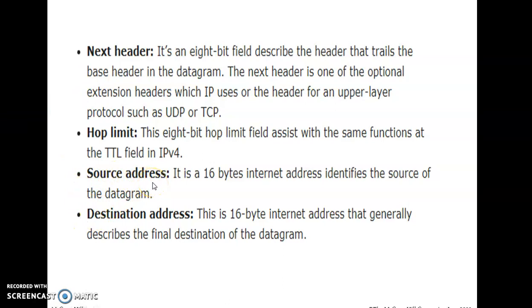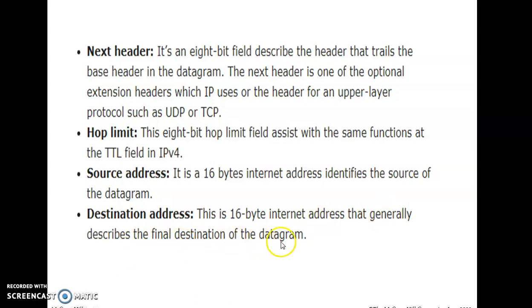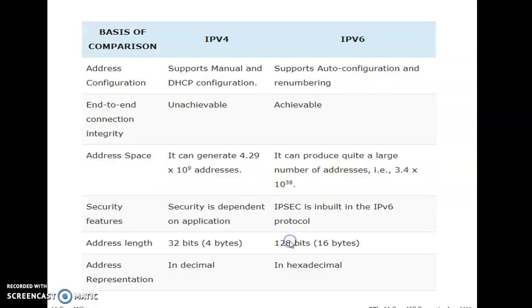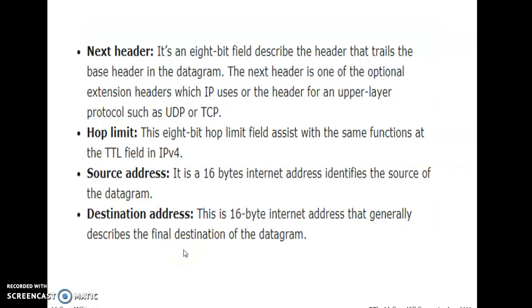Next is the source address. The IPv6 source address is 128 bits, equivalent to a 16-byte internet address, identifying the source of the packet or datagram. Next is the destination address, a 16-byte internet address that describes the final destination of the packet. With this we have discussed the IPv6 packet format.